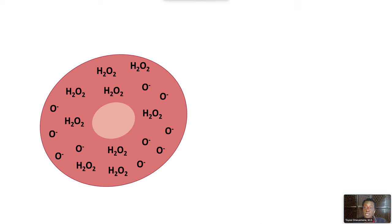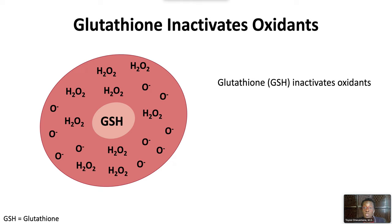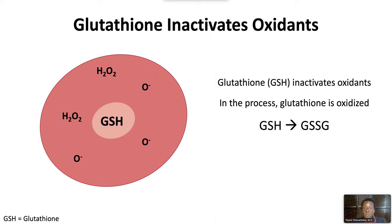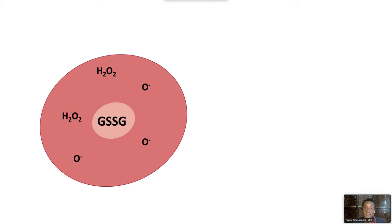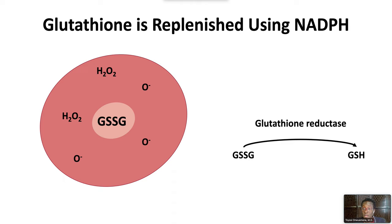In the red blood cell, oxidative injury is avoided due to the action of glutathione. Glutathione, in conjunction with glutathione peroxidase, inactivates oxidants. In the process, glutathione is oxidized to oxidized glutathione. Oxidized glutathione is reduced back to glutathione through the action of glutathione reductase.